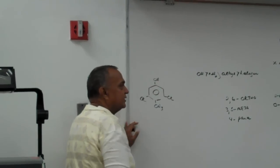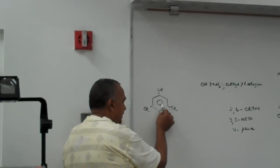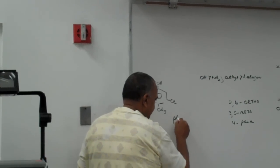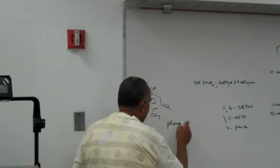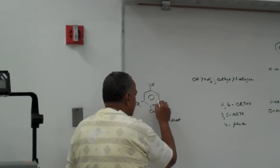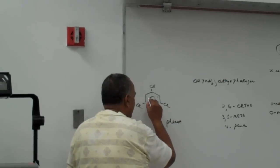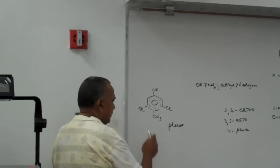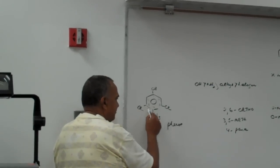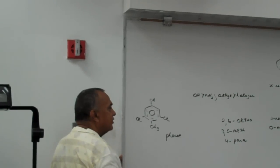OH takes preference of being part of the parent. So the parent is the ring plus the OH, which is phenol. And we number now 1, 2, 3, 4, 5, 6. We have two chlorines at position 3 and 5, and we have a methyl at position 4.